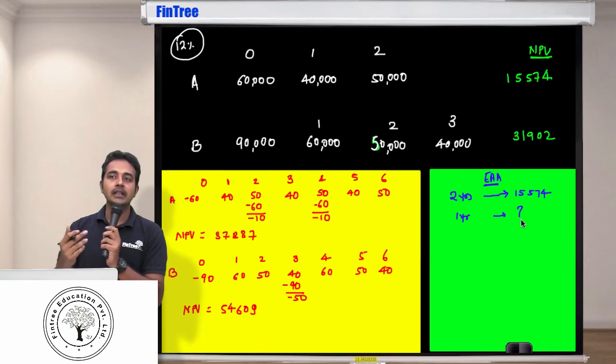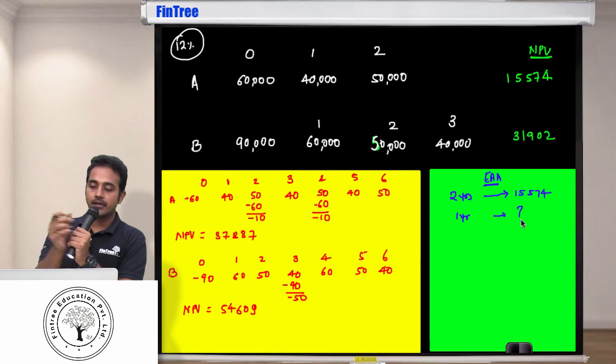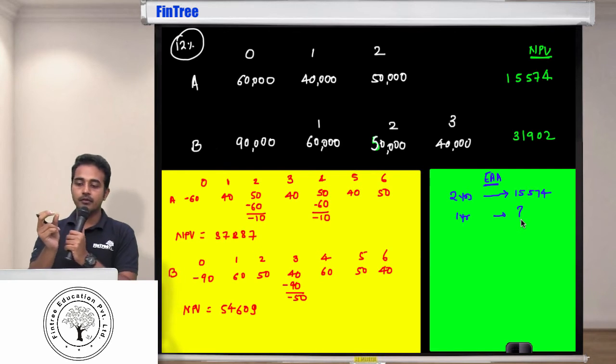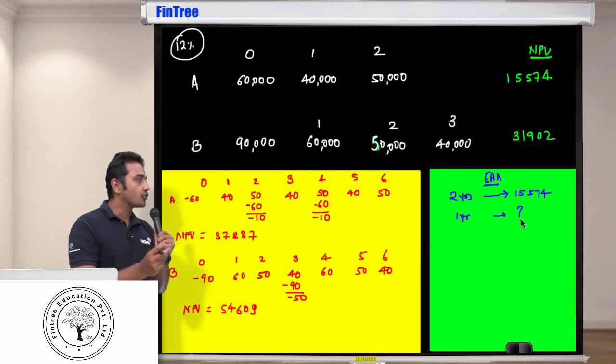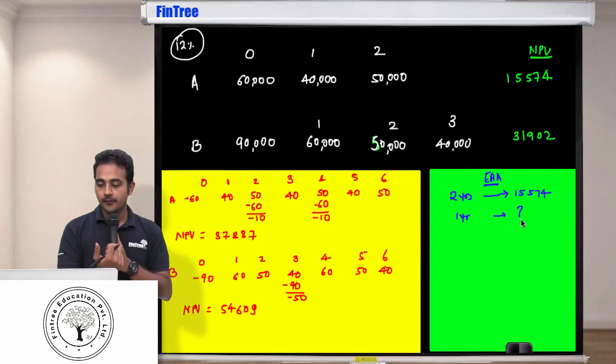Let's do it. Second, clear TVM. Second, clear TVM. 15,574 is present value because that's what we've earned. 15,574 is present value. Two should be N, 2 is going to be your N. 12 is going to be your I/Y, compute payment.